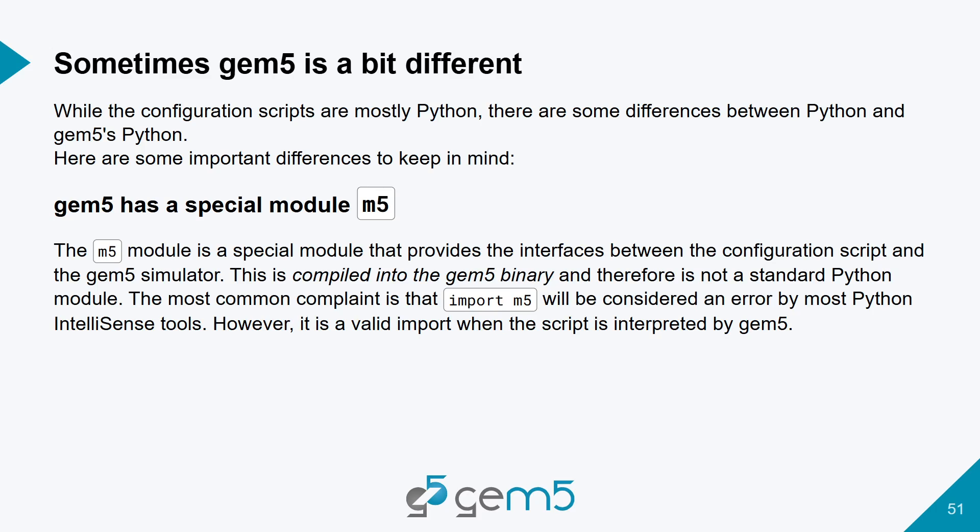The m5 module is not in the standard library — it's inside gem5. It's compiled into the gem5 binary, and when gem5 interprets your script, it imports all that for you. A common question is: my code editor is underlining the m5 library and saying it's not there. It doesn't matter — when you run the gem5 binary on your configuration script, it will import it. It's valid. It's just unique to gem5. m5 is essentially all the glue that connects your configuration script to the actual simulator.